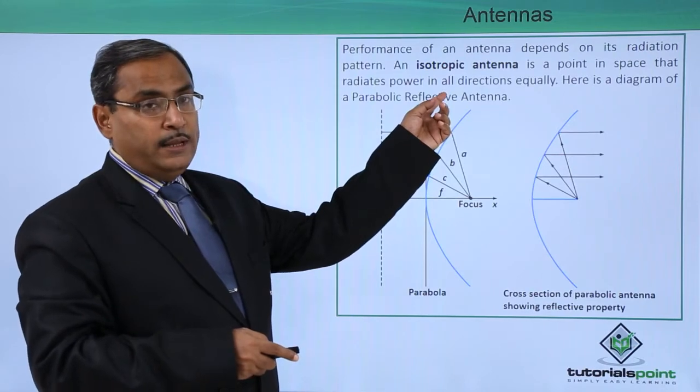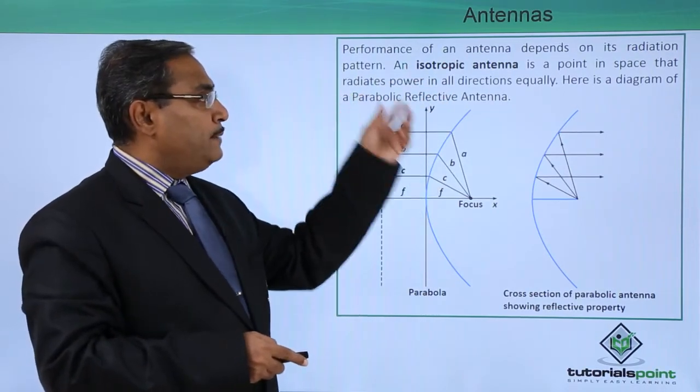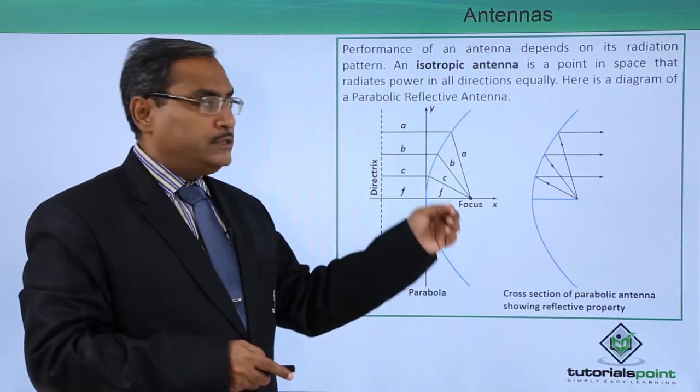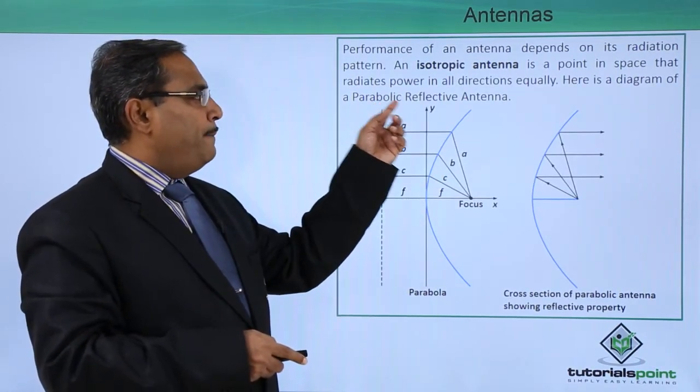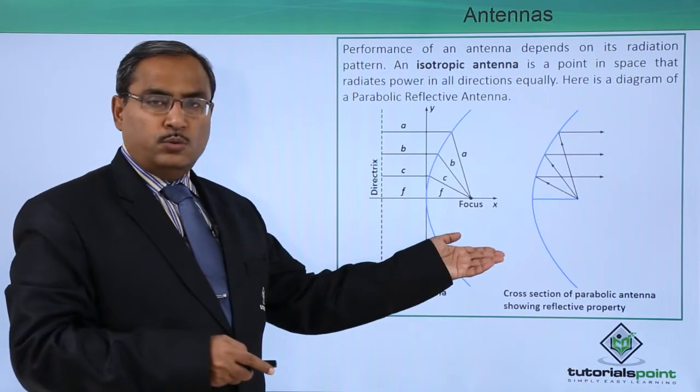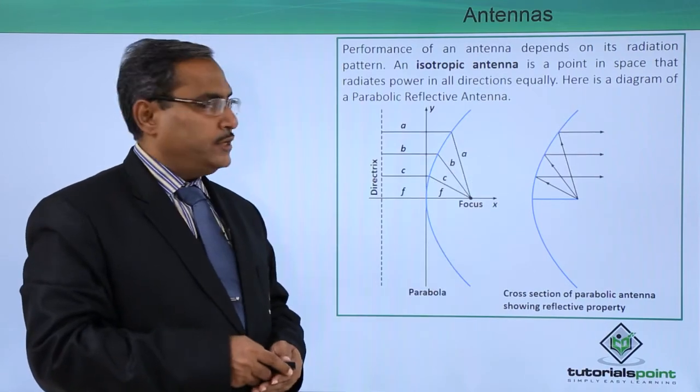An isotropic antenna is a point in space that can radiate power in all directions uniformly. Here is a diagram of a parabolic reflective antenna. We have discussed the parabolic reflective antenna and taken one cross section.